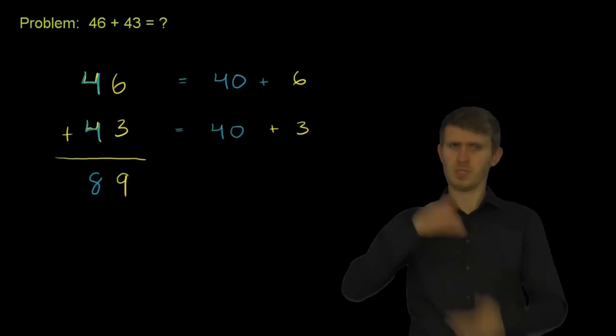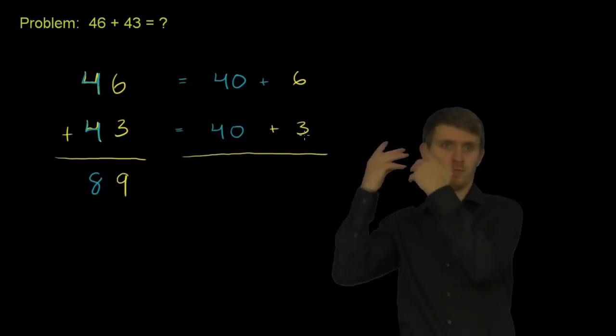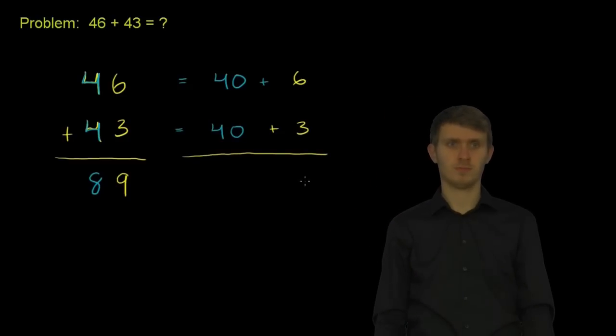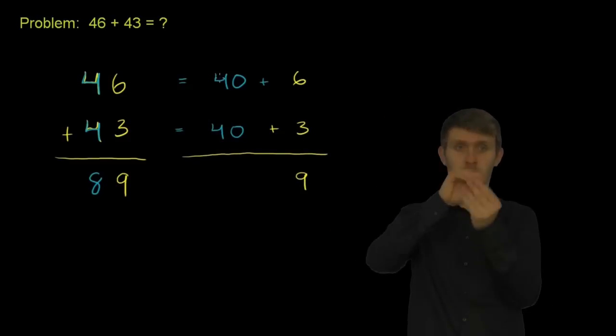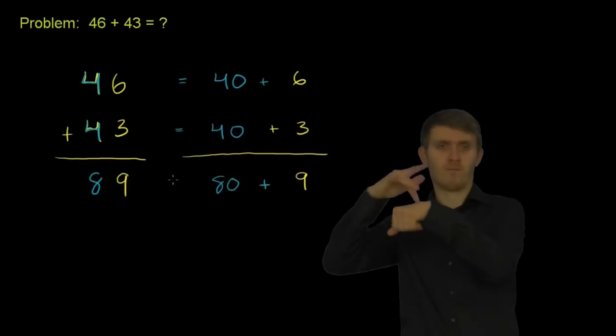We've expanded these out before. And so when you add them, when you add six plus three, you get nine. And when you add 40 plus 40, you get 80. So you get 80 plus nine, which is 89.